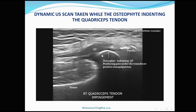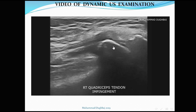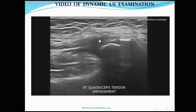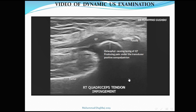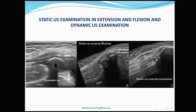Dynamic ultrasound demonstrates that in extension the osteophyte moves away, but in flexion it compresses the quadriceps tendon. The anterior supratrochlear osteophyte from the femoral condyle compresses the quadriceps tendon during flexion, causing pain. This osteophyte causes tenting of the quadriceps tendon with positive sonopalpation under the transducer, confirming our expectation. Beyond 30 degrees of flexion, the anterior osteophyte is clearly seen compressing the quadriceps tendon.